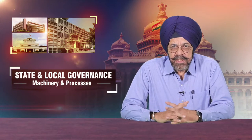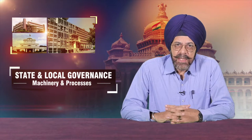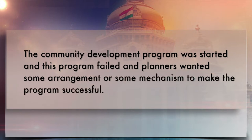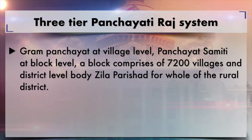This Zilla Parishat came up after the recommendations of the Balwantrai Mehta Committee. This committee was established after independence, when the Community Development Program was started and this program failed. Planners wanted some mechanism to make the program successful, so this committee was established, and it recommended a three-tier panchayati raj system: gram panchayat at village level, panchayat samiti at block level (a block comprising 70 to 100 villages), and Zilla Parishat as the district level body for the whole rural district.